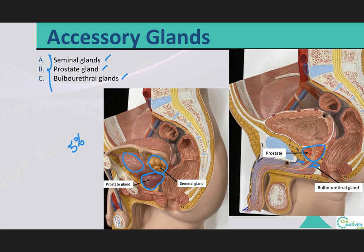The major functions of these glands include activating the spermatozoa, providing the nutrients spermatozoa need for motility, and producing buffers that counteract the acidity of the urethral and vaginal contents. Let's take a look at each of these glands in a little more detail.